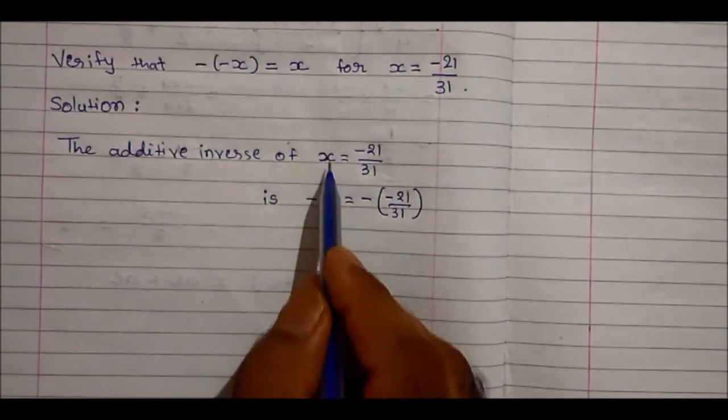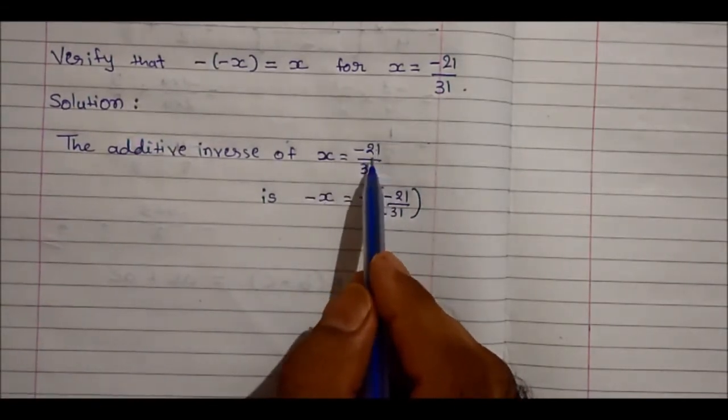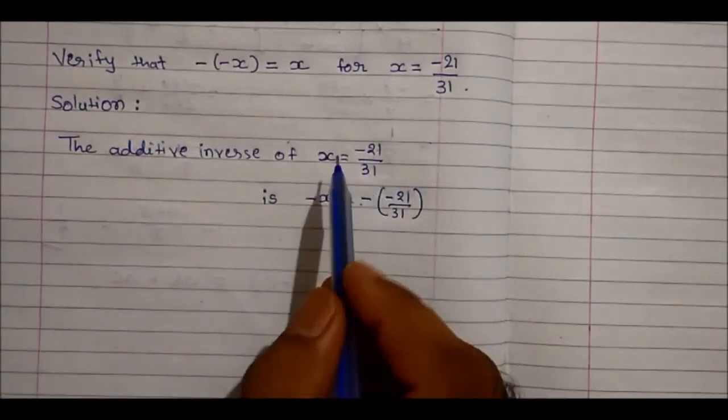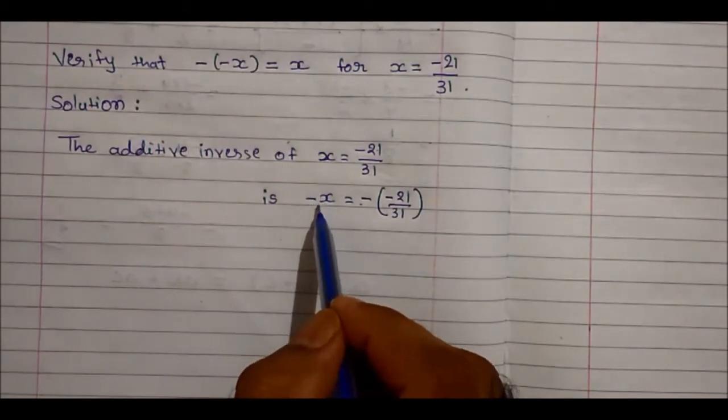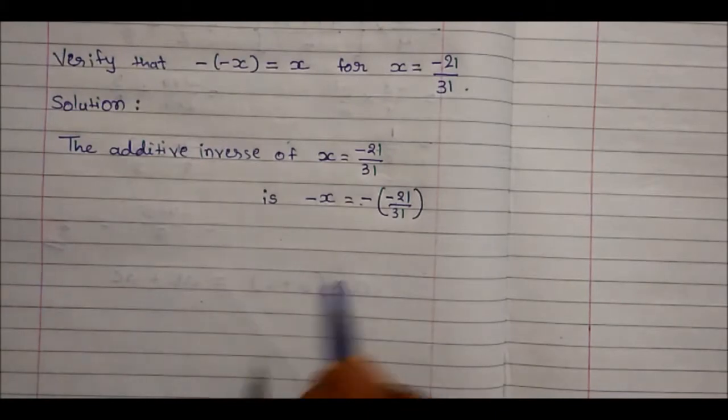The additive inverse of x is minus x, and minus 21 upon 31 is minus of minus 21 upon 31. Why? Because when we add x to minus x or minus x to x we will get 0. Let's check for this also.